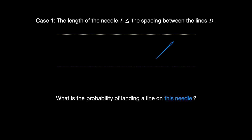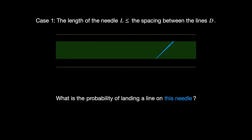Let's actually compute some probability now. We're going to work with case one — the more typical case — which is to assume that the length of the needle L is less than or equal to the spacing between the lines D. What is the probability that if I threw a horizontal line onto this domain, I would cross this needle? That's the probability of throwing a horizontal line onto this green zone. When you compute a probability, it's the ratio of when the event occurs to all total events — good divided by all. In this configuration, good is the height of the green zone, which I'll name Y, and all is the height of the entire domain, D.